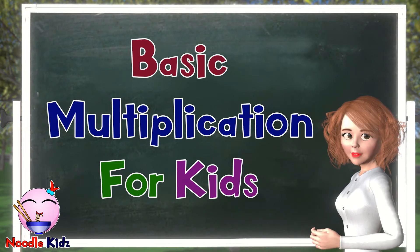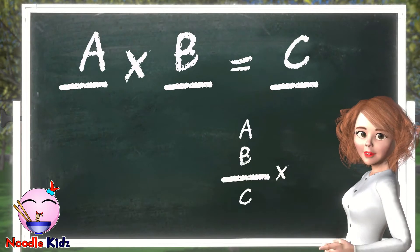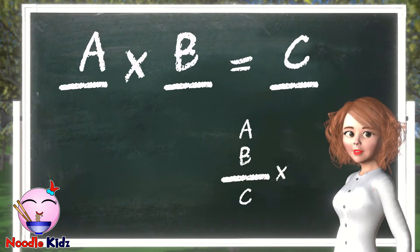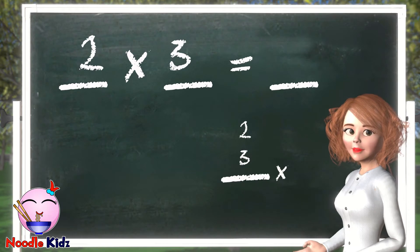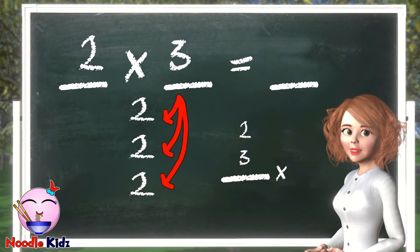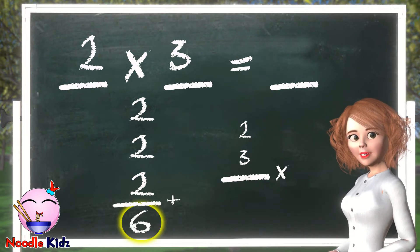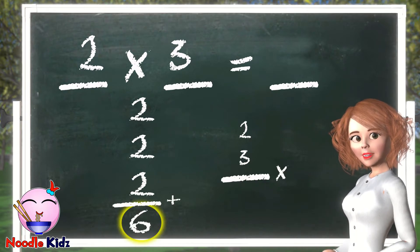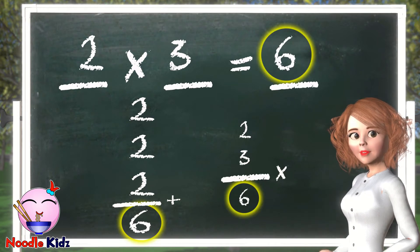Basic Multiplication for Kids. Multiplication is when you take a number and add it together a number of times. For example, two times three is when you take the number two and add it three times. Two plus two plus two equals six.